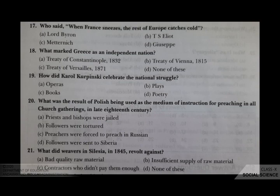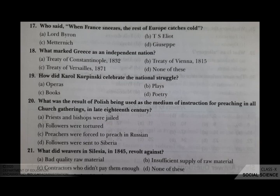The 20th question: what was the result of Polish being used as the medium of instruction and preaching in all church gatherings in the late 18th century? Your options are A priests and bishops were jailed, B followers were tortured, C preachers were forced to preach in Russian, D followers were sent to Siberia. The correct answer is A, priests and bishops were jailed.